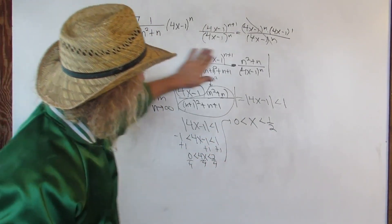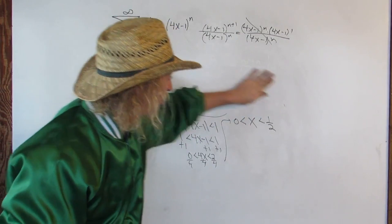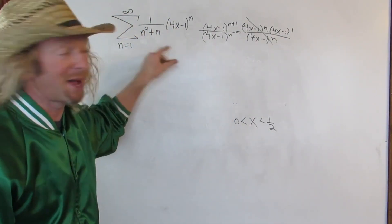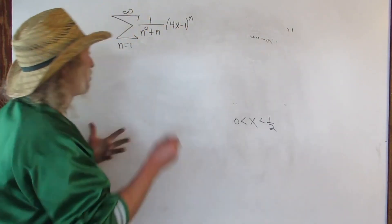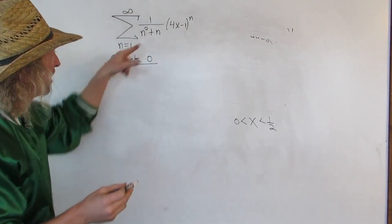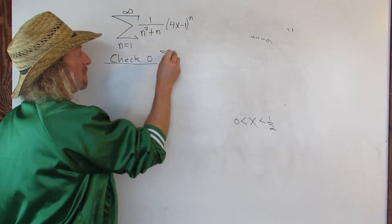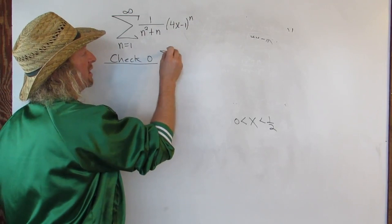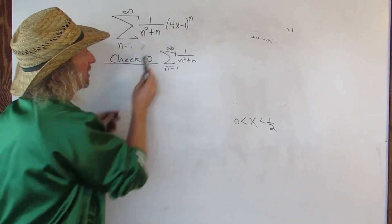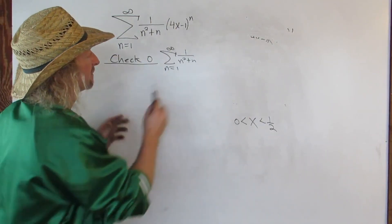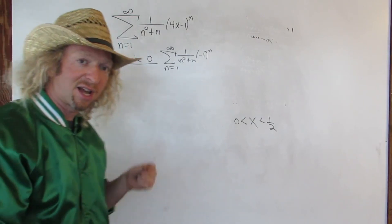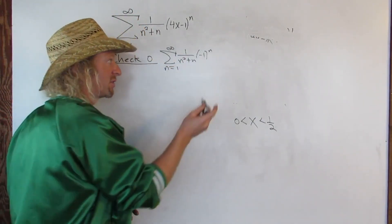So how do you do that? So I'm going to erase all of this. So to check the endpoints, what you do is you take these numbers and you plug them back in here. Back in here. So let's check 0. And you have to use all those series tests. So it's beautiful. I love series. So put the 0 here. So you would get infinite sum. N equals 1 to infinity. 1 over N squared plus N. When you put a 0 here, it goes away. You just get negative 1 to the N. And this is going to converge. This is a convergent alternating series. How do I know that? Just practice. Let's do it. Let's go through the motions.